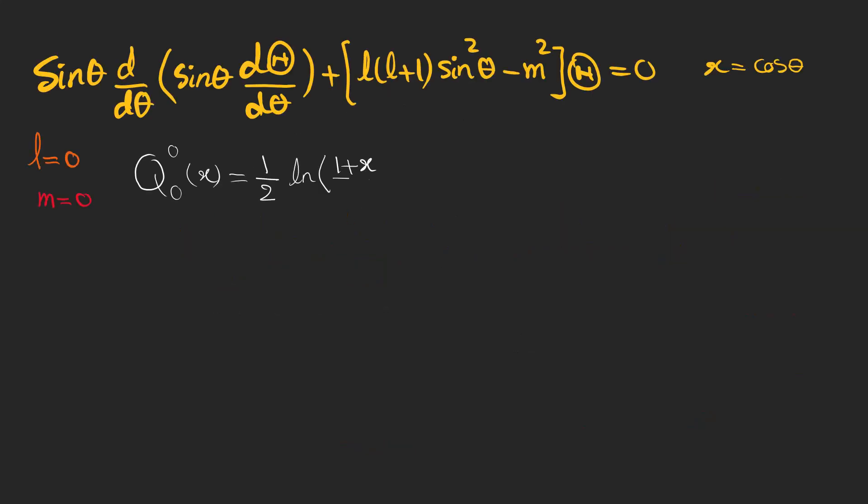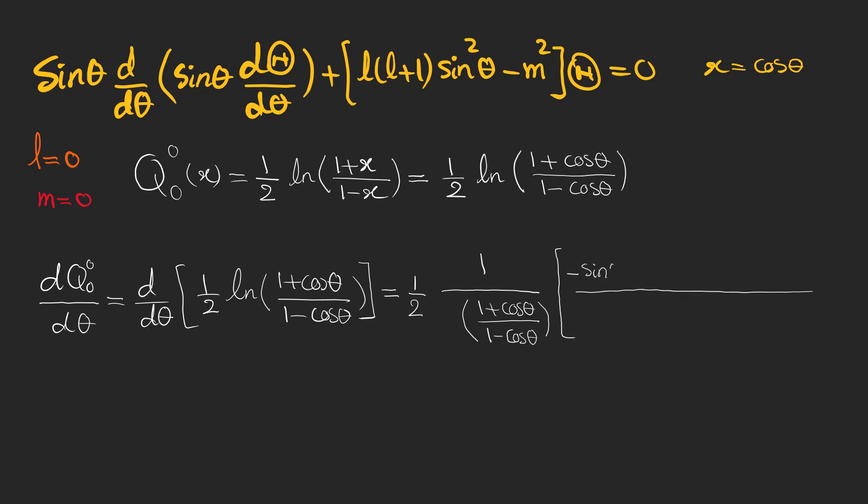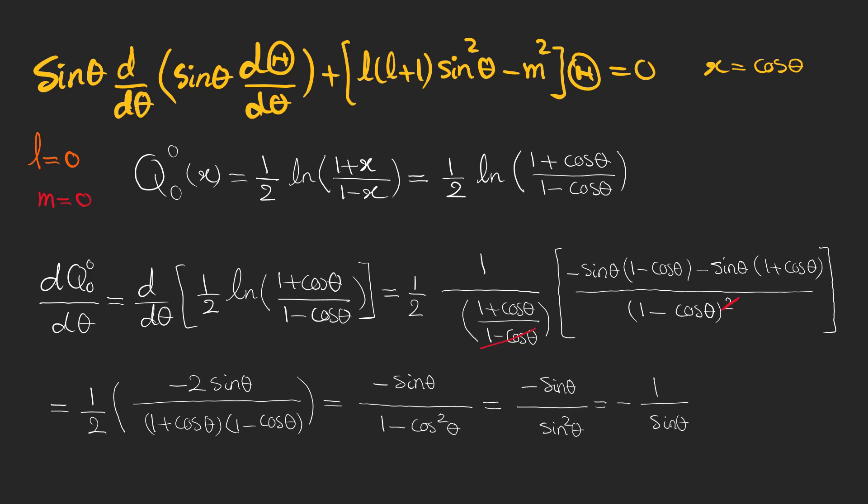For example, for L=0 and M=0, the second kind function is this. You can find its derivatives and put it in the equation for L and M equals 0 and see that it is a solution to this differential equation. But for theta equal to 0 or pi, the function blows up.